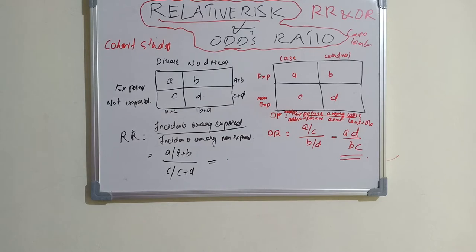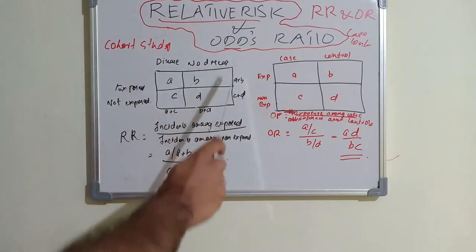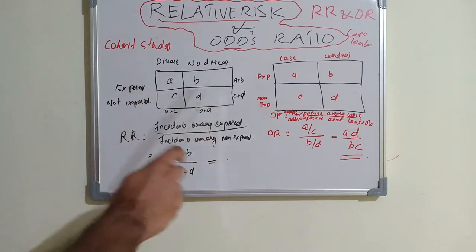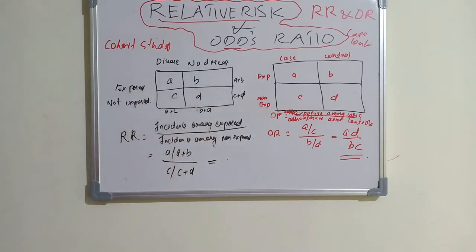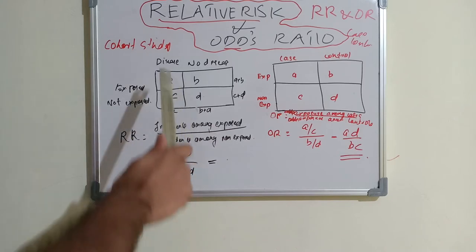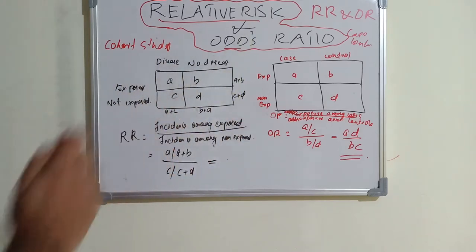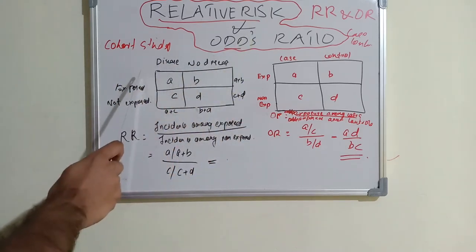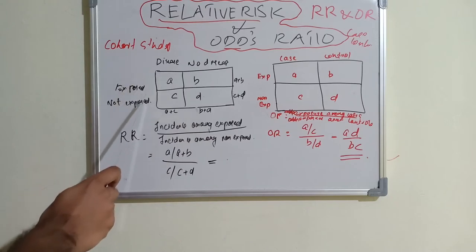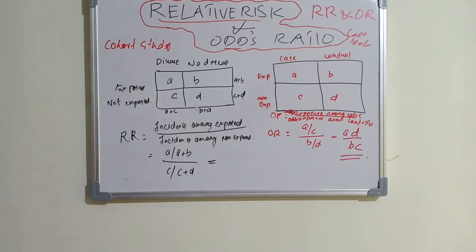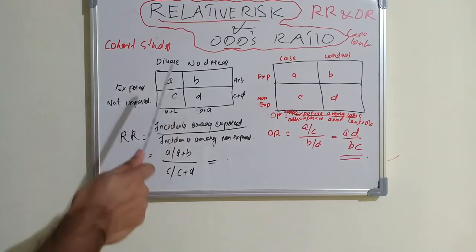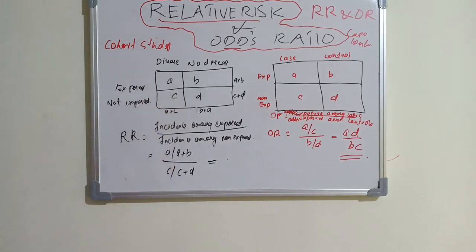We should always make a two-by-two contingency table. Always put on the x-axis 'disease' and 'no disease', and on the y-axis 'exposed' and 'not exposed', labeling the cells a, b, c, d — and don't change this alphabet order.